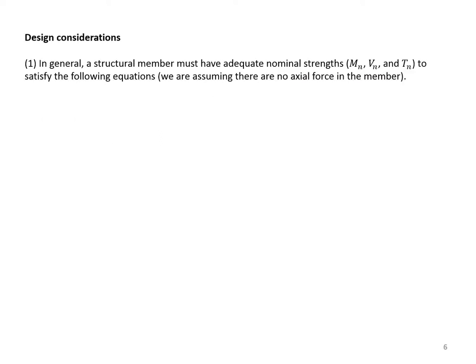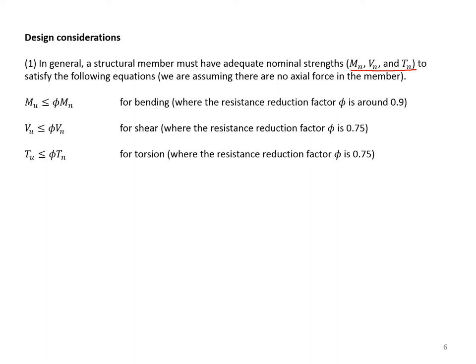Let's review design considerations for torsional design in beams. In general, a structural member must have adequate nominal strength M sub n, V sub n, and T sub n to satisfy the design equations. We are assuming there are no axial forces in the member. If there is an axial load, there will be a force equation added to the list.